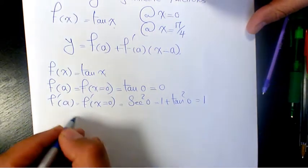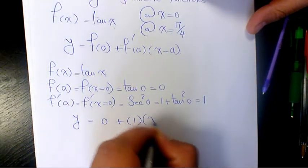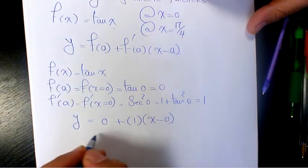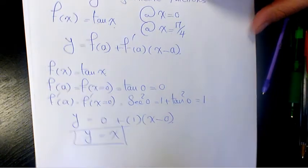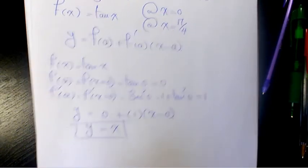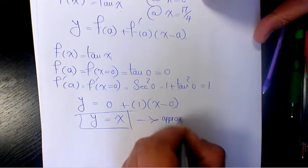So when you substitute into the formula, it's going to be y equals 0 plus 1 times x minus 0. So it's going to be y equals x. That's the approximation function.